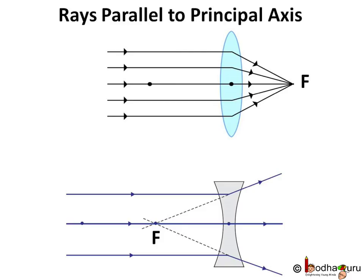The rays traveling parallel to principal axis converge at the focus in case of convex lens and appear to diverge from the focus in case of concave lens.